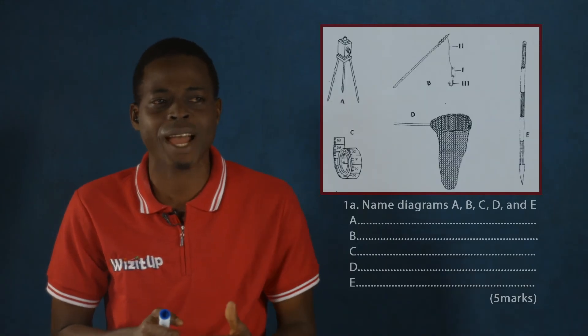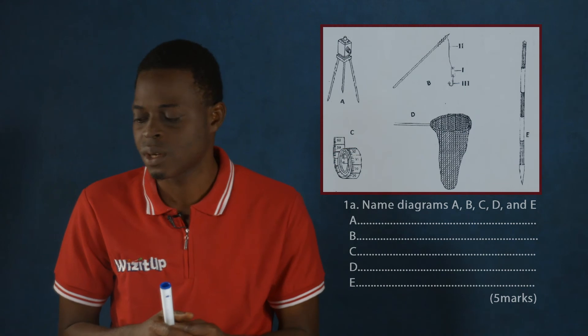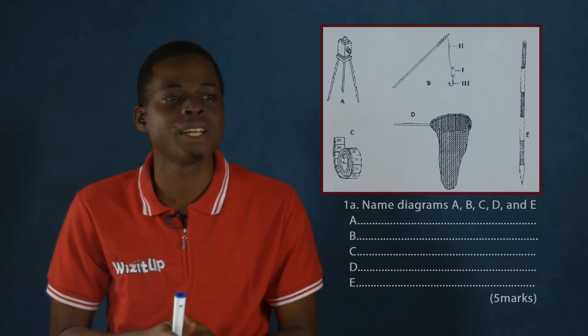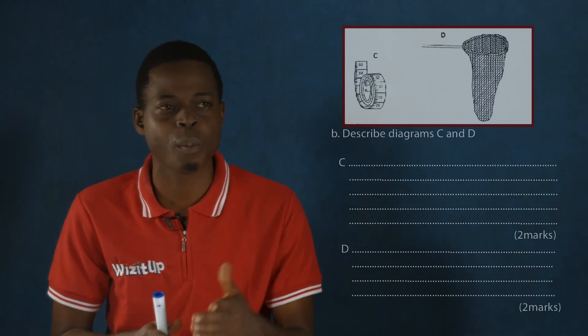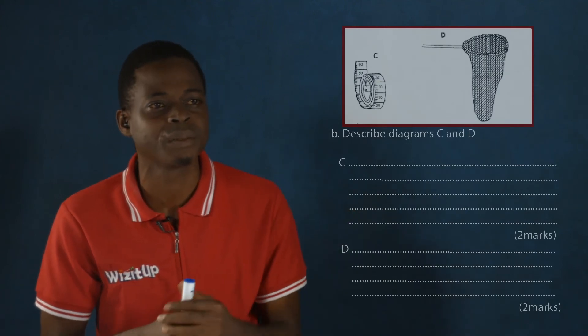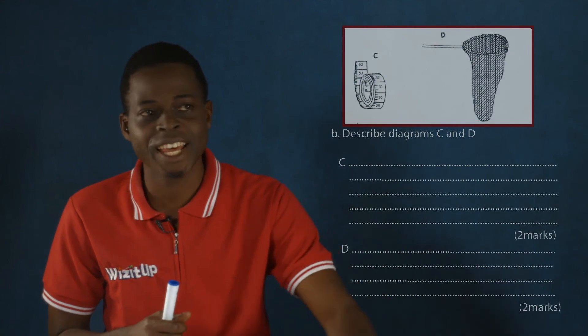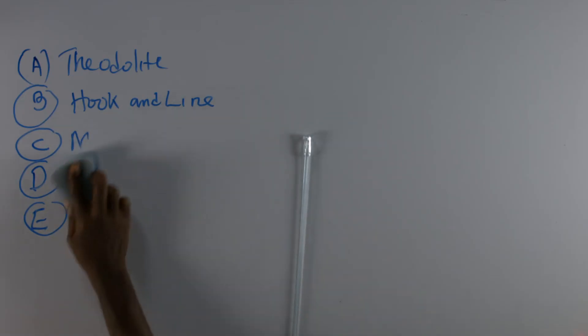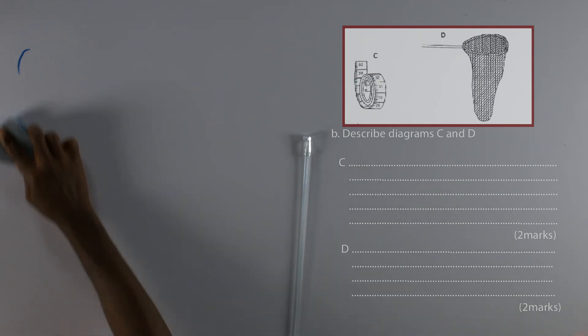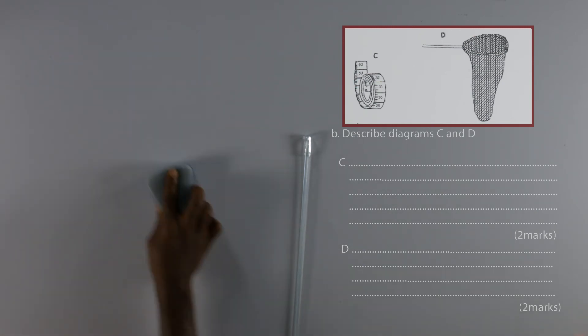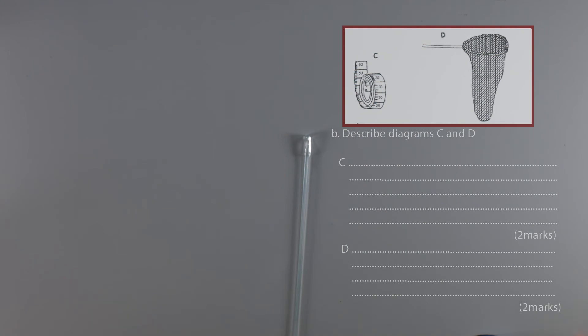Let's move now to question B. Let us whiz it up to B. And then in B, we have the question that goes like this: Describe diagrams C and D.